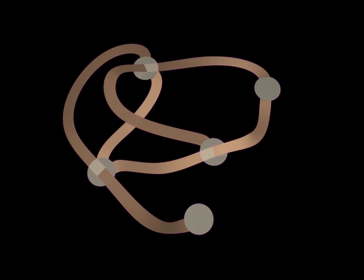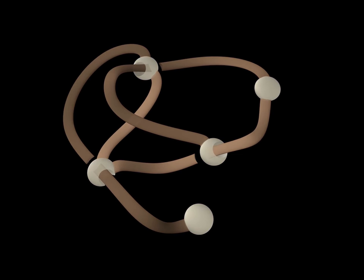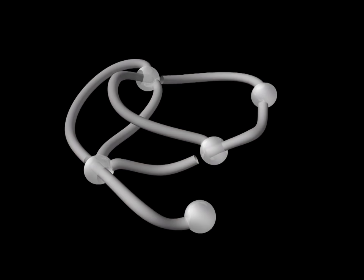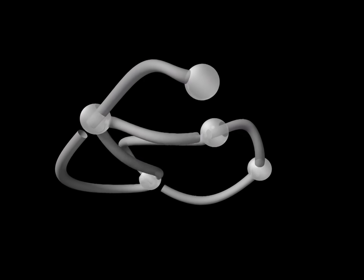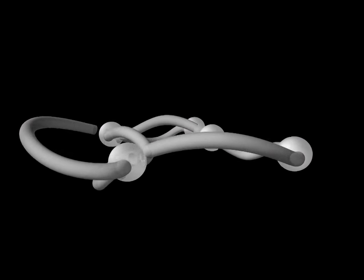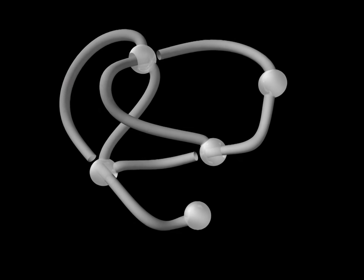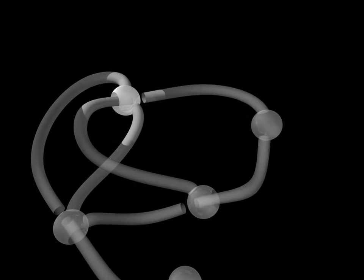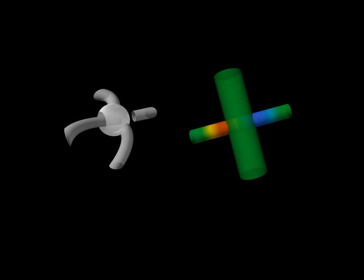We can inflate disks and ribbons to get ribbon knotted surfaces in four dimensions. The disks become spheres and the ribbons become tubes attached to the spheres. The tubes go through the spheres, passing once below and once above the spherical surface. This is the same as passing a thin tube through a thick one.